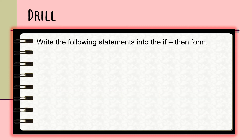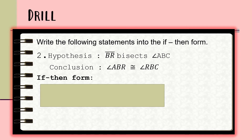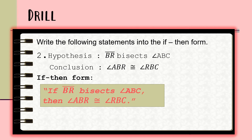Number two: the hypothesis is 'BR bisects angle ABC,' and the conclusion is 'angle ABR is congruent to angle RBC.' The if-then form of this statement is: 'If BR bisects angle ABC, then angle ABR is congruent to angle RBC.'